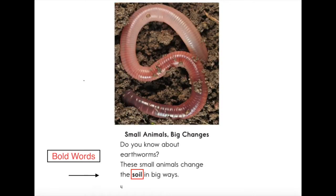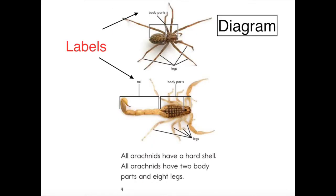Bold words help a reader know that this is an important word to learn. A diagram is a labeled picture. The label tells the name of a certain part of the picture.